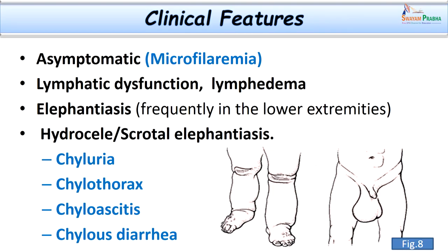Learning the clinical features will not only help us in diagnosis but also in considering the differential diagnosis. Most of the time the patient may be asymptomatic even with heavy microfilaremia, as microfilaria are non-pathogenic forms. When adult worms are present in large numbers in the afferent and efferent lymphatics, they lead to lymphatic dysfunction and lymphatic edema. Lymph stasis or blockage results in elephantiasis — frequently the lower limbs are involved. Hydrocele and scrotal elephantiasis are also presenting forms. Depending on the site of involvement, the patient may present with chyluria, chylothorax, chyloascites, or chylous diarrhea.